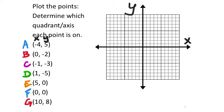Starting with point A at negative 4, 5 — I start at the origin on the x-axis and go left 4: negative 1, 2, 3, 4. The y value is positive, so I go up 5: 1, 2, 3, 4, 5. This is the location of point A at negative 4, 5.